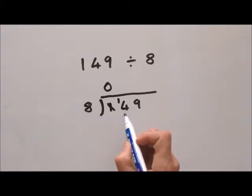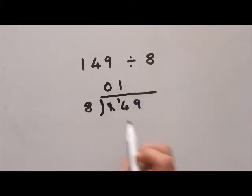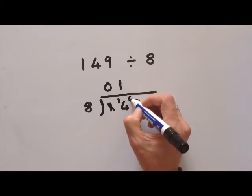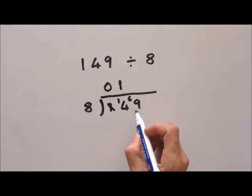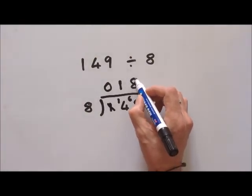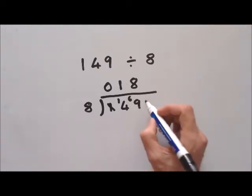How many eights can we get out of fourteen? One times eight is eight, two times eight is sixteen — that's too high, so just one. The remainder is six. How many eights can we get out of sixty-nine? Eight times eight is sixty-four, so we put eight here.